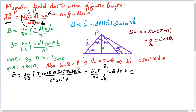Mu naught is the permeability constant — the permeability of free space — and mu naught over 4 pi comes to around 10 to the power of minus 7. So let's see how we can find the total magnetic field due to a wire of finite length.